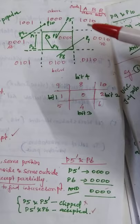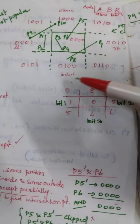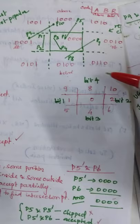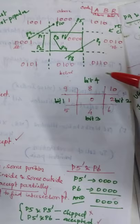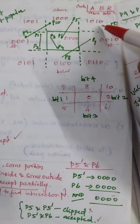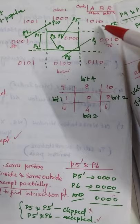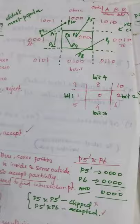The region codes are: 0001 for bit 1, 0010 for bit 2, 0100 for bit 4, 0101 for bit 5, 0110 for bit 6, 1000 for bit 8, 1001 for bit 9, and 1010 for bit 10. These are the 9 different regions, and using these region codes we can analyze the algorithm.